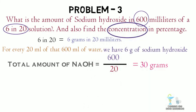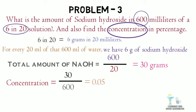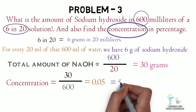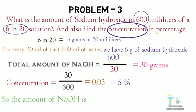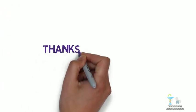We are also asked to find the concentration in percentage. We have the quantity of preparation — 600 milliliters — and the quantity of solute — 30 grams. Applying the formula: 30 divided by 600 gives 0.05, which is 5%. The total amount of sodium hydroxide is 30 grams and the concentration is 5%. We can cross-check and verify that our answer is correct.